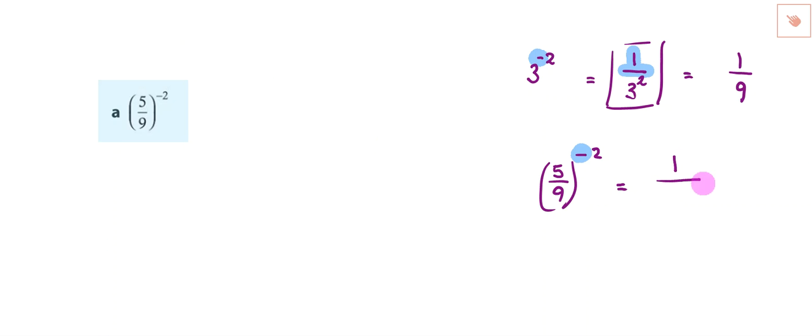We could say it's 1 over 5 over 9, which technically is right. But we then have to do something with that. So this would still be to the power of 2, but we can't leave it like that. We can't have a fraction in a fraction.